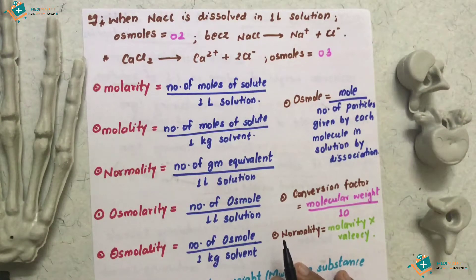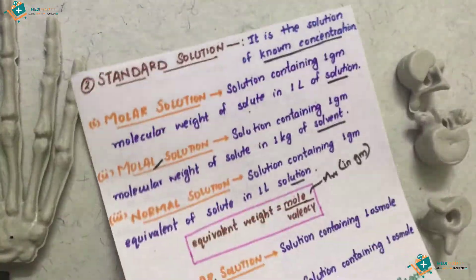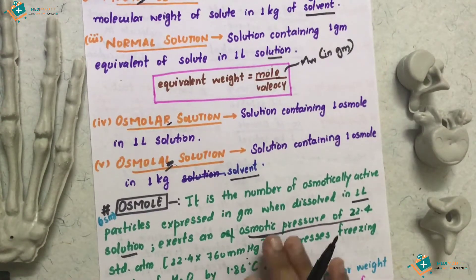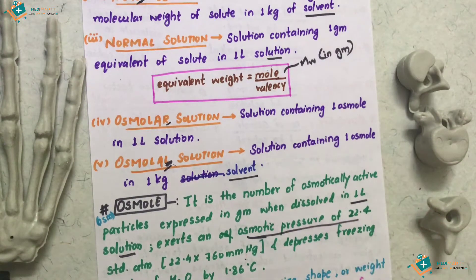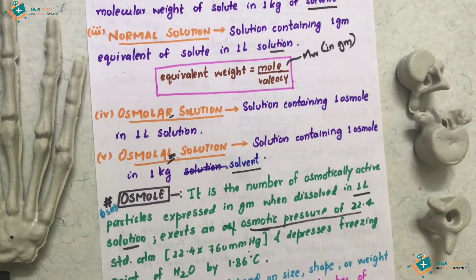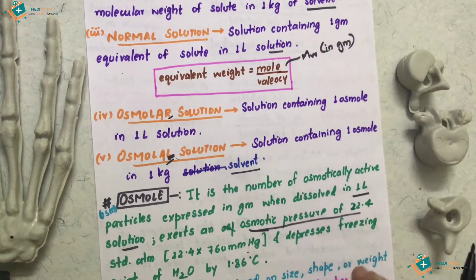Without wasting much time, let's start. In our previous lecture we covered Osmol. We said that Osmol is the number of osmotic active substances which can participate in osmosis. The conditions are that the solution must be dilute, osmotic pressure will be standard at 22.4 standard atmospheres, and the freezing point of water will be depressed.